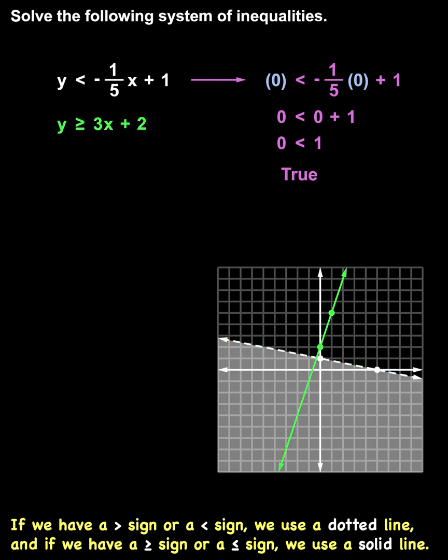Next, we determine which side of our second line to shade by using a test point on either side of the second line, such as (0, 0).